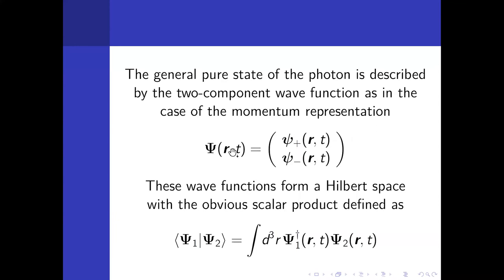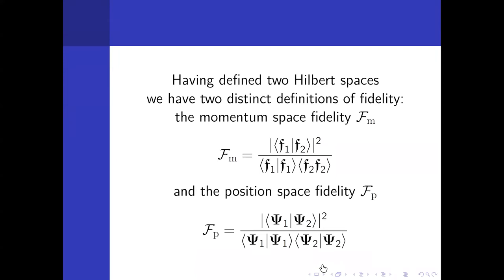Now back to our problem of fidelity. Once we have wave function in position space, we can apply obvious rules. We construct the Hilbert space with the scalar product, which is the obvious scalar product, defined as the scalar product of these two vectors, one of them Hermitian conjugate. Once we have the definition of the scalar product, we can define fidelity. So now we have two fidelities. One fidelity which comes from Hilbert space in momentum space, one fidelity which comes from position space.